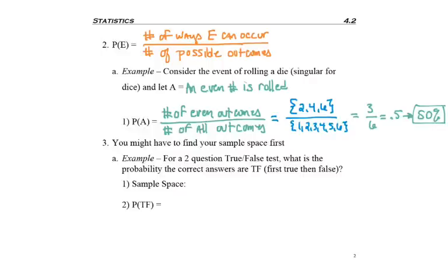So like if we were going to be taking a two-question true-false test, and we wanted to find the probability that the answer was true first and then false second, first I might need to come up with my sample space. True-true, true-false, false-false, false-true. Again, this might be where a tree would help you if you couldn't get that together. But I need to know that there are four events on a two-question true-false test.